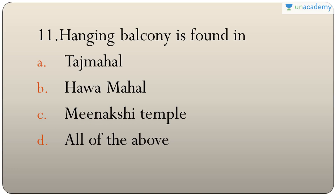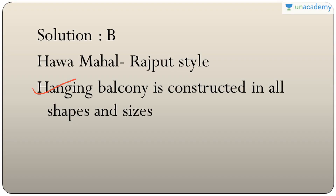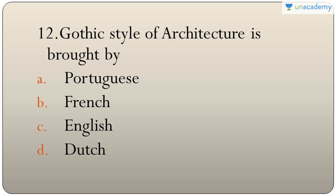Question eleven: hanging balcony is found in which structure? The answer is B — Hawa Mahal. It was part of the Rajput style, and hanging balconies can be constructed in any shape or size.